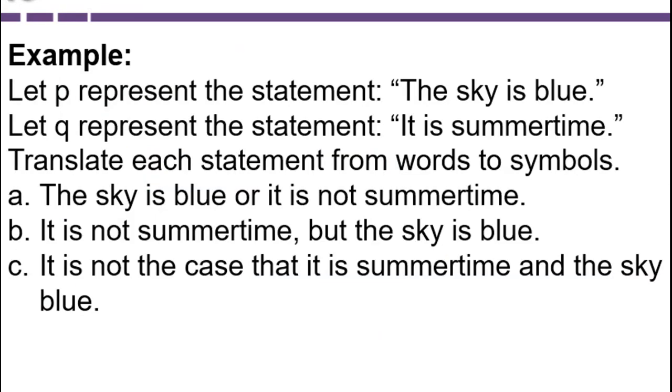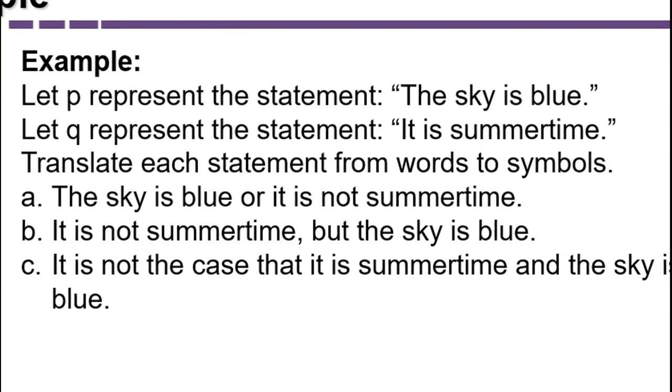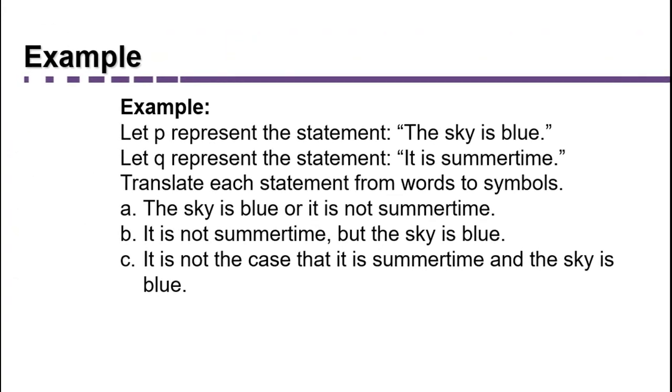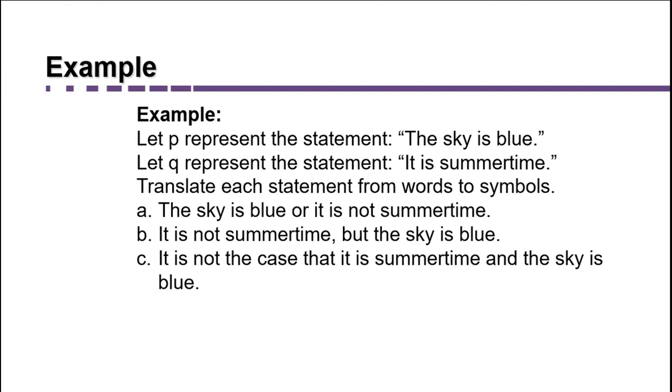Now let's go the other way. Let's start with statements given in words and translate them into symbols. So we're going to let P represent the statement, the sky is blue, and Q the statement, it is summertime. Looking at part A, the sky is blue OR it is NOT summertime. Sky is blue would be P OR would be the right side V symbol, and it is NOT summertime would be it's NOT Q. So negation of Q. So for part A, we get P OR NOT Q.